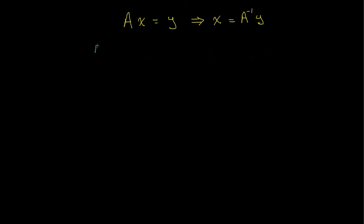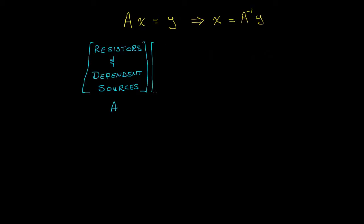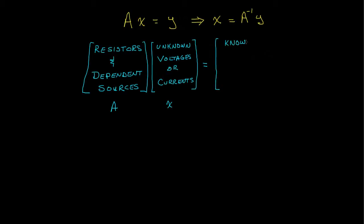The values for the resistors and dependent sources determine the coefficients of the equations — that is, they determine the components of the matrix A, as we've written it here. The unknown voltages and currents serve as the unknown variables, or as we've written it here, they serve as x. And the values of the independent voltage and current sources determine the known part of the equation, what we've called y.